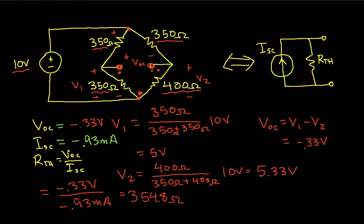So there we have it. The Norton equivalent circuit here is going to be a current source with negative 0.93 milliamps and a Thevenin equivalent resistance of 354.8 ohms.